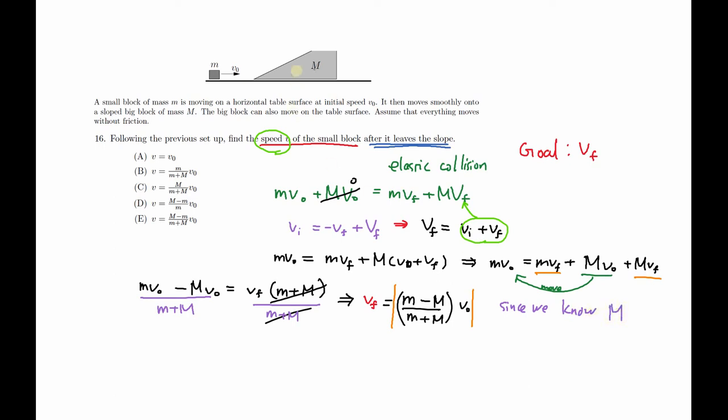So instead of this, since we know the mass of our big block, our incline plane, is much bigger than the smaller block, we have to make this positive by flipping the M, big M and the small M. So, M minus M, big M times V0.